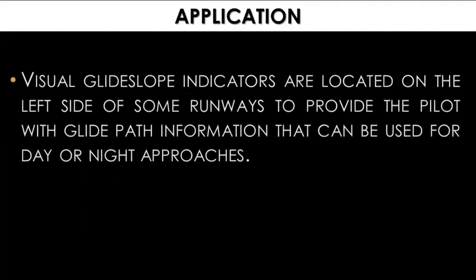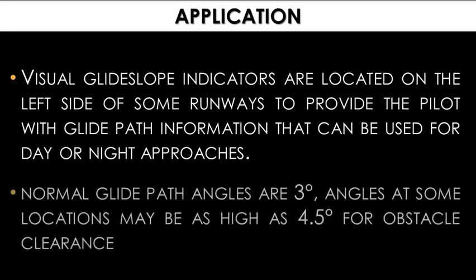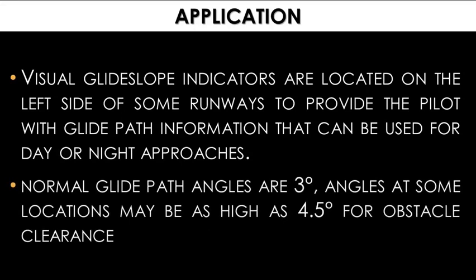Visual glide slope indicators are located on the left side of some runways to provide the pilot with glide path information that can be used for day or night approaches. Normal glide path angles are 3 degrees, though angles at some locations may be as high as 4.5 degrees for obstacle clearance. Descent using a visual glide slope indicator should not be initiated until the aircraft is visually aligned with the extended runway centerline.